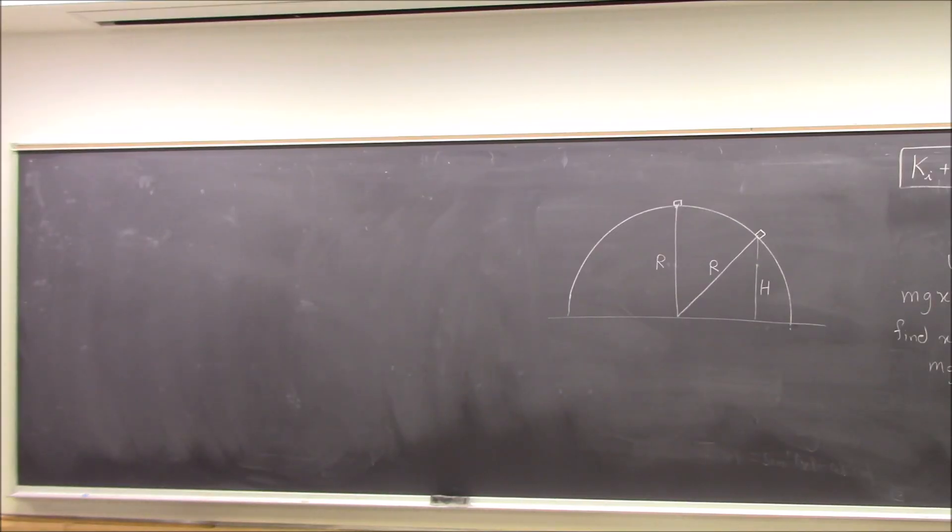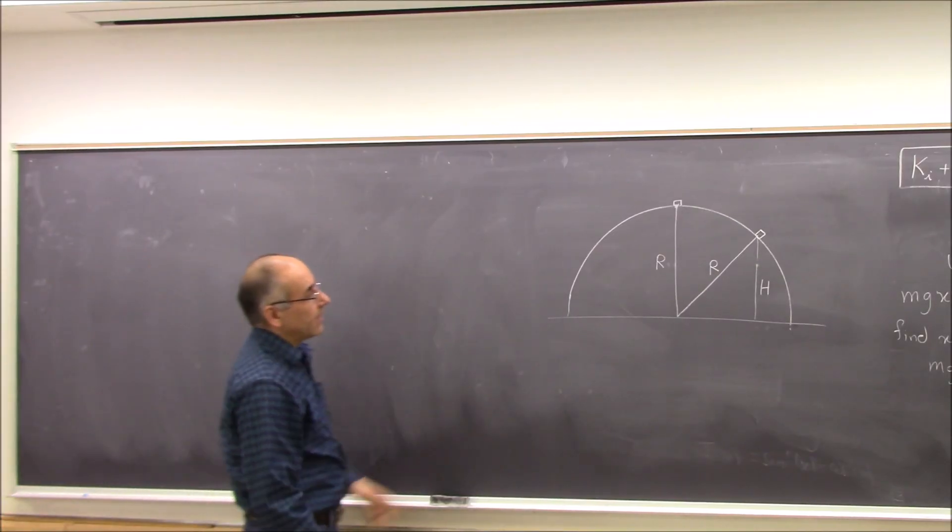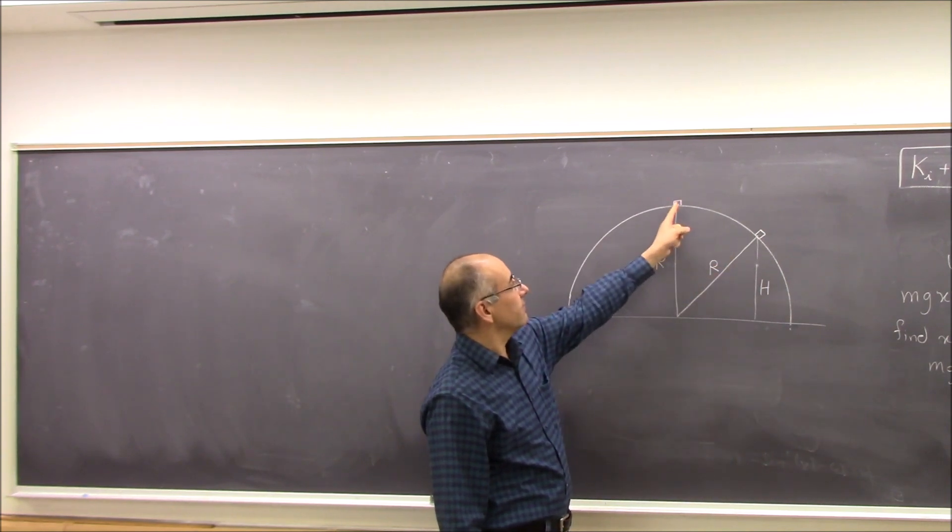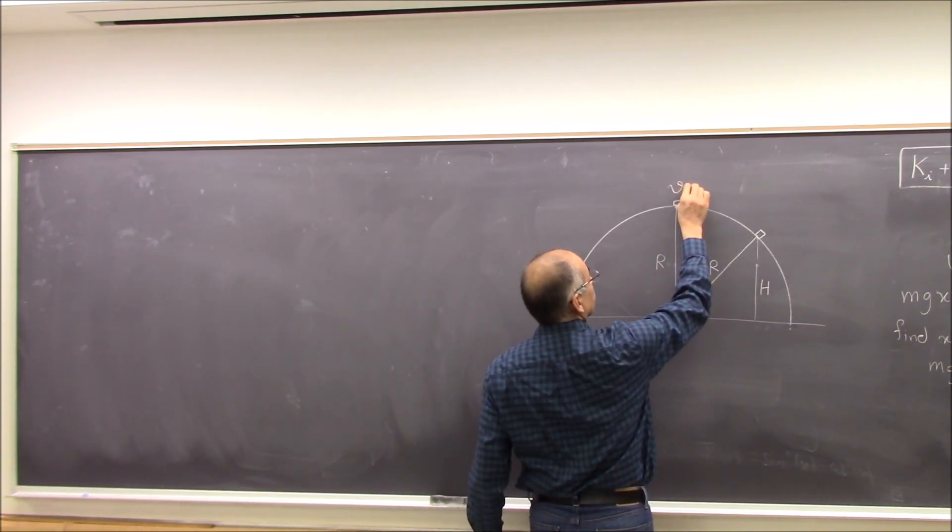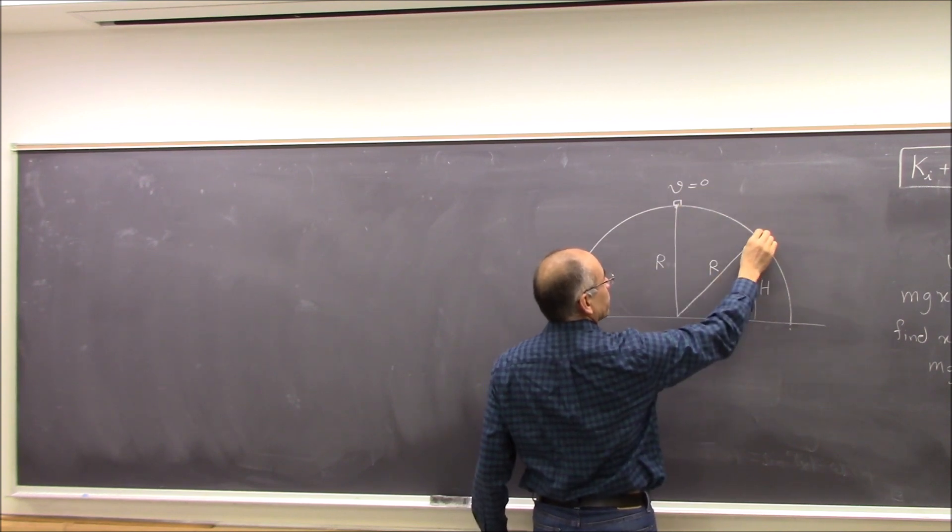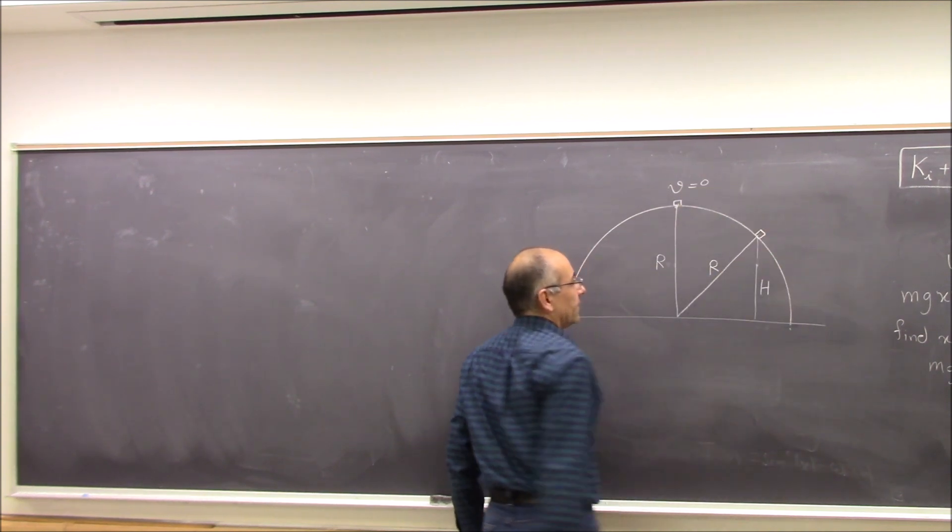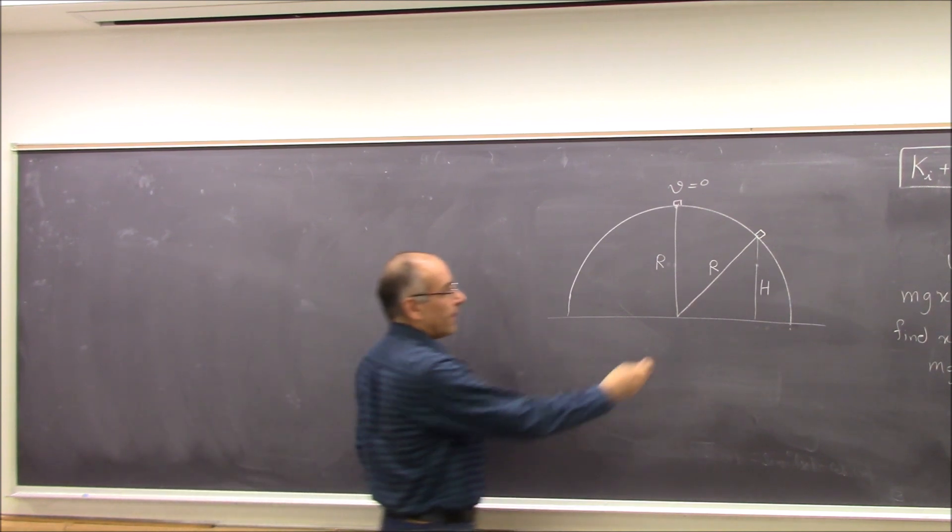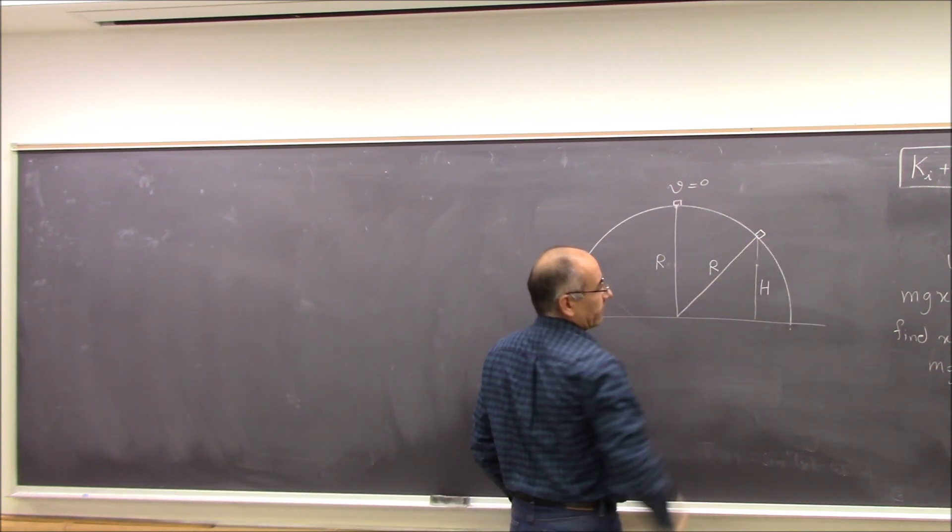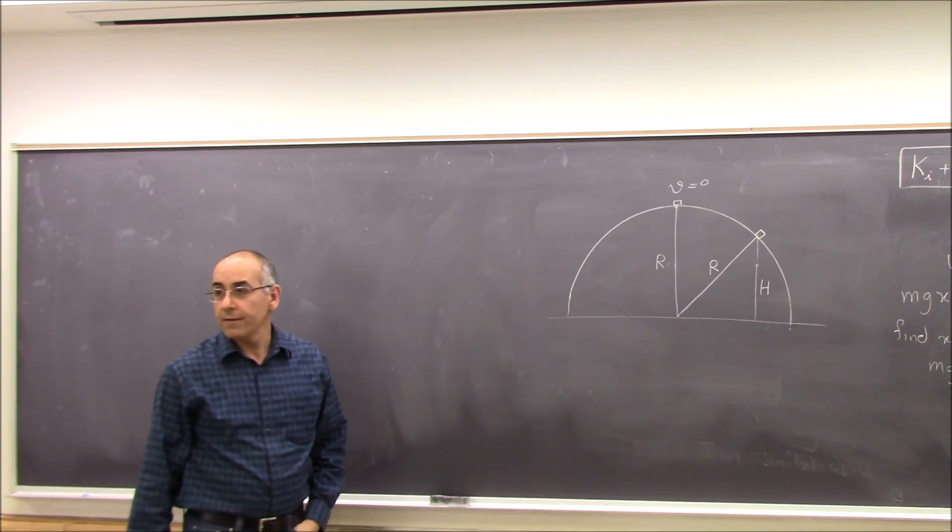All right. We have this hemisphere, an object starts from a negligible velocity here. You can make it as zero to a point where it leaves the surface. We want to find the height at which it leaves the surface. All right.